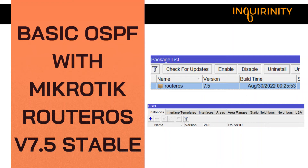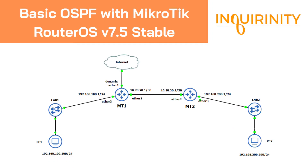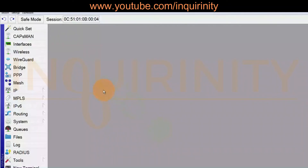This is a demonstration of basic OSPF with MikroTik RouterOS version 7.5 stable. We have two MikroTik CHR routers with version 7.5 stable firmware. The objective is for endpoints in both LANs to be able to reach one another, as well as reach the internet, using the Open Shortest Path First dynamic routing protocol.